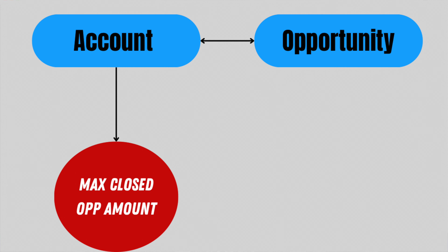Today we are going to use two objects: Account and Opportunity. On the Account object we have a currency field called Max Closed Opportunity Amount. So this is the data model for today's scenario.